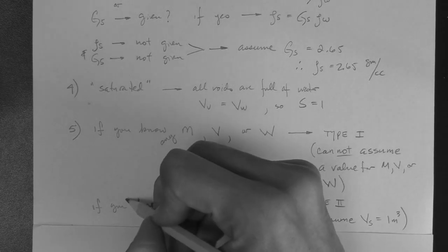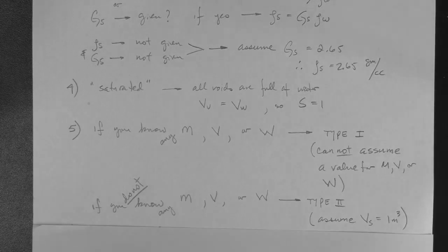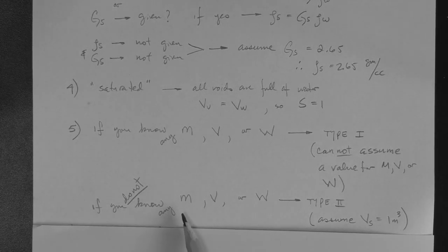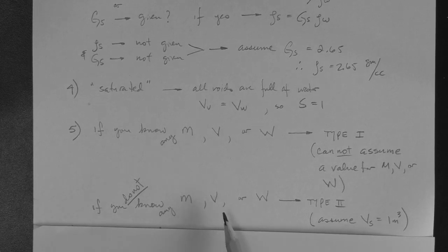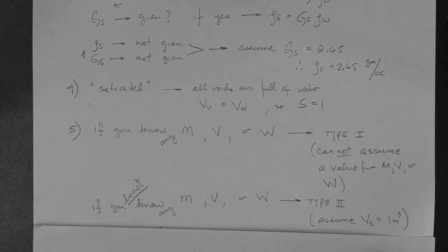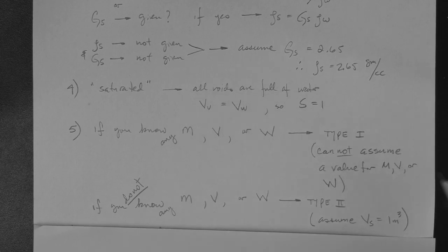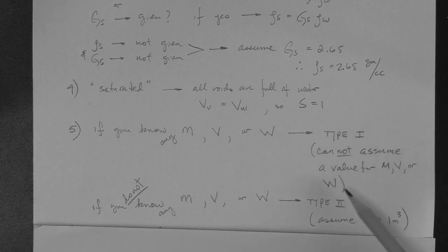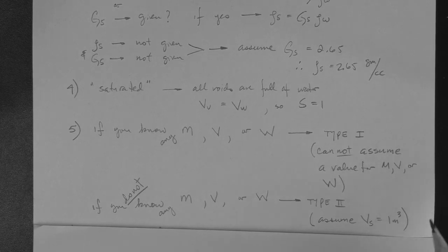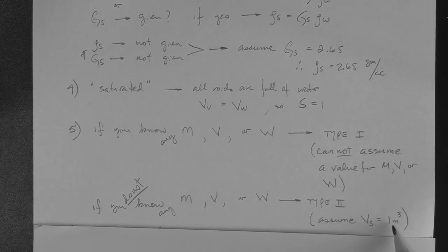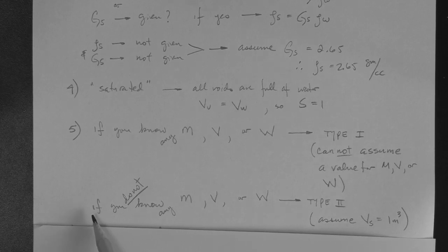However, if you do not know any value of mass, any value of volume, or any value of weight, then this is called the type 2 problem. And you can assume a value of mass, for example, a value for the mass of the solids, or a value for the mass of the soil, or the weight of the soil, or the volume of water, or any of that. You can assume any of these, but perhaps the best one, if you had to choose one for all problems, is to assume that the volume of solids is one meter cubed.